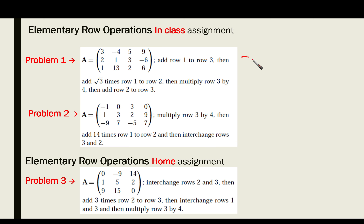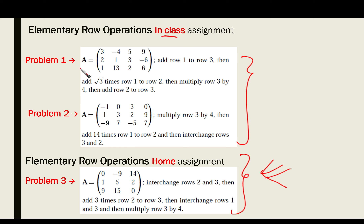For the in-class assignment, we have two problems. First: given matrix A, add row 1 to row 3, then add √3 times row 1 to row 2, then multiply row 3 by 4, then add row 2 to row 3. Second: given another matrix A, multiply row 3 by 4, then add 14 times row 1 to row 2, then interchange rows 3 and 2. Stop the video and work these by yourself.